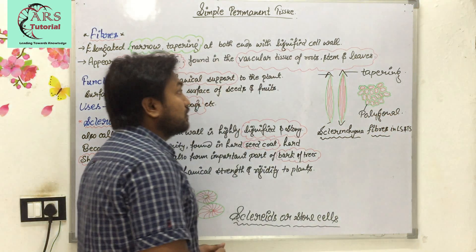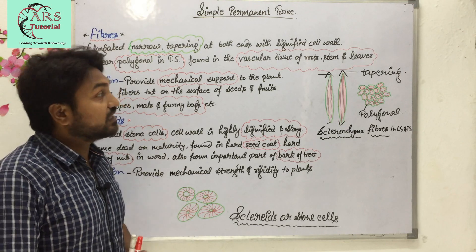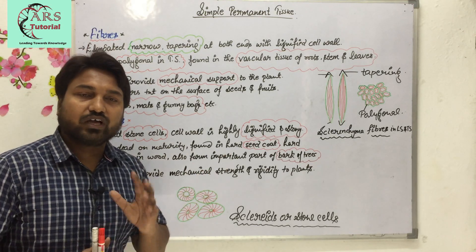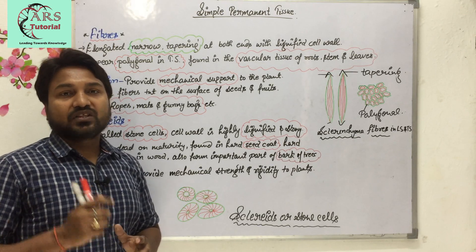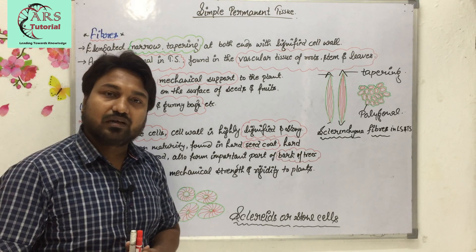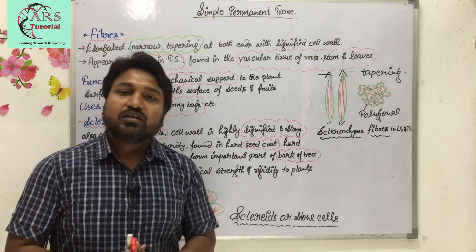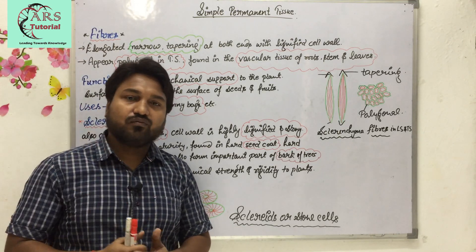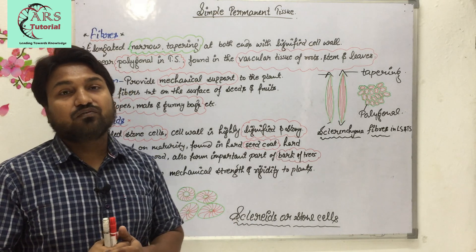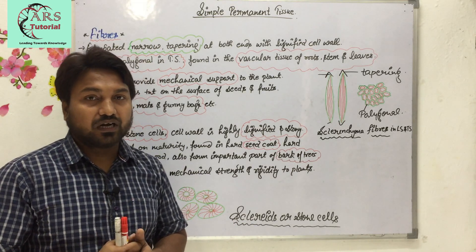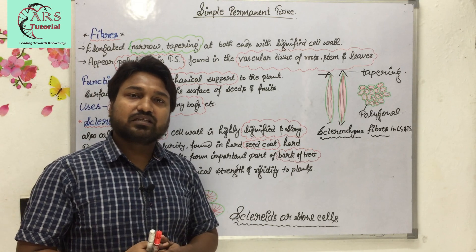Regarding location, fibers are found in the vascular tissue of roots, stem, and leaves. Vascular tissue means xylem and phloem — wherever the term 'vascular' comes, it is talking about xylem and phloem. Xylem is responsible for conduction of water and minerals from root to leaves, whereas phloem is responsible for conduction of food material from leaves to all parts of the plant. In the next video we will discuss complex permanent tissue — the types and functions of xylem and phloem.